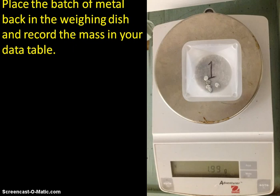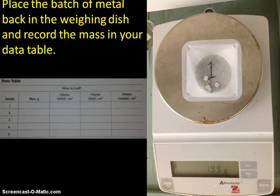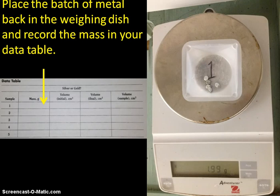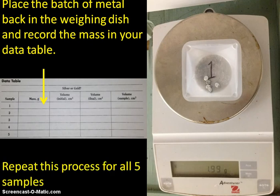Place the batch of metal back into the weighing dish and record the mass into your data table. The mass of the first sample belongs under the column heading mass in the sample number one row. Repeat this process for all five samples.